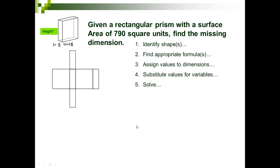We have one more example: given a rectangular prism with a surface area of 790 square units, find the missing dimensions. This is a situation where we work backwards. The shape is a rectangular prism. The formula from the formula sheet for surface area is: SA = lowercase p·H + 2·B, where lowercase p is the perimeter of the base times height, plus two times the area of the base.